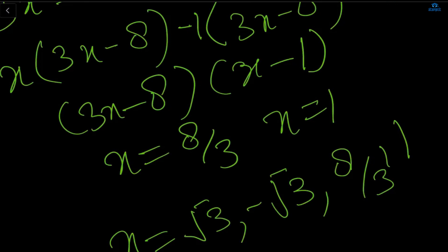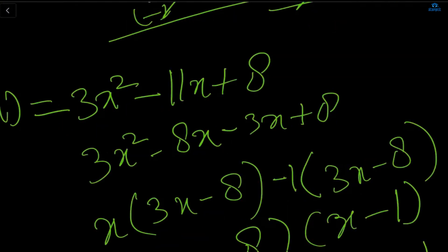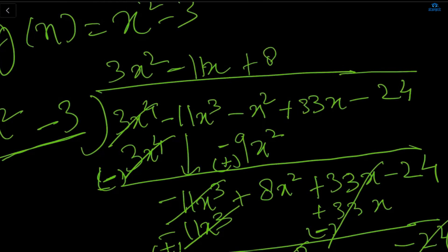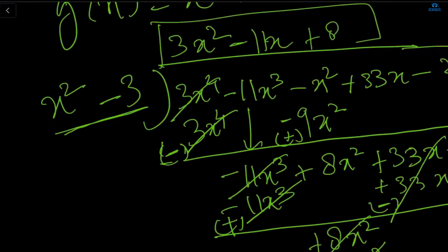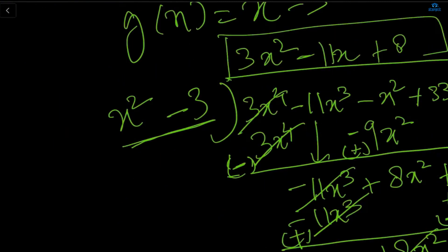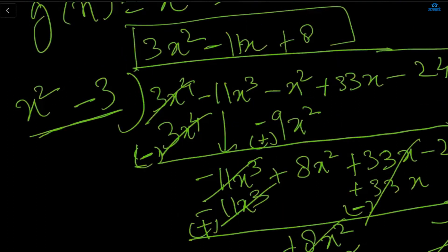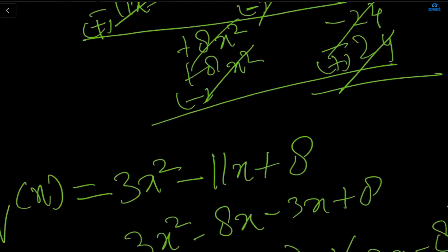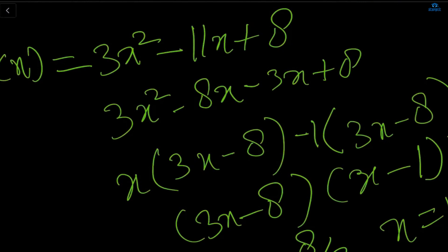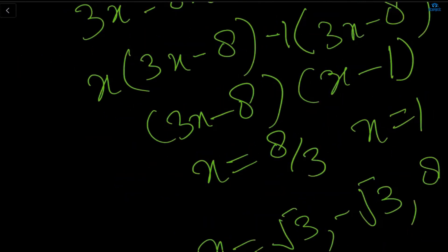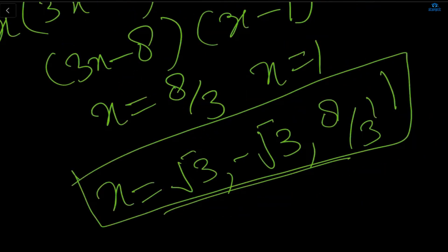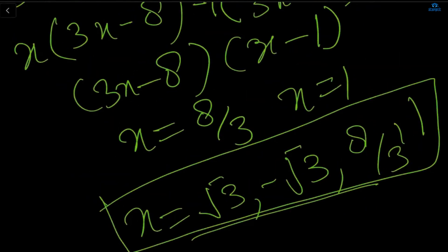Any doubts? You need to be very clear about how you are dividing and whether you are getting the correct quotient. Since x² - 3 is a factor of the polynomial, it will fully divide px and the remainder should always be zero. Whatever value you get in the quotient, split the middle term to break it down and get the two different zeros. Ritika and Roshil, are you facing any issue understanding polynomial division?